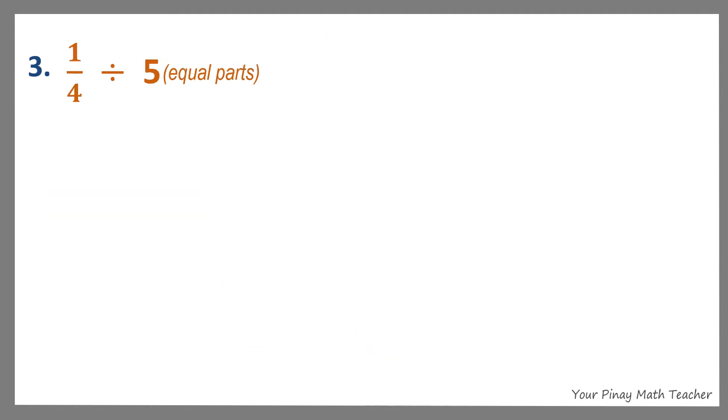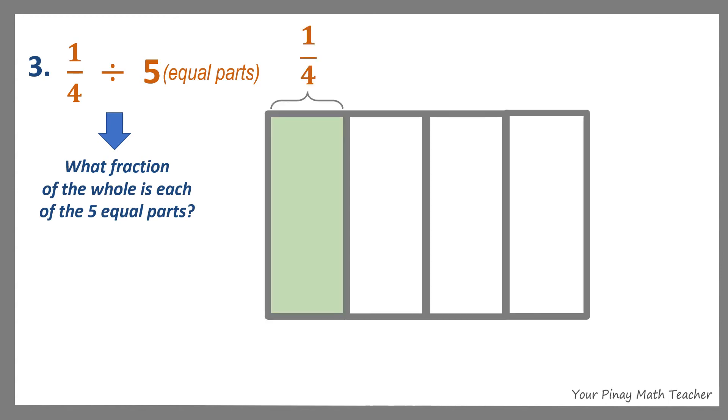Number 3: 1 fourth divided by 5. This may represent 1 fourth sack of rice being divided or shared by 5 persons equally. This also answers the question, what fraction of the whole is each of the 5 equal parts? So here we have the shaded part 1 fourth divided into 5 equal parts.